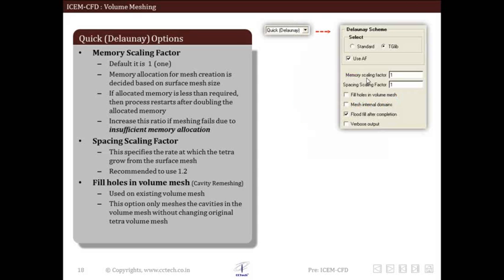The next option is fill holes in volume mesh. This tick mark option in the lower section of the panel is used to fill holes in the volume mesh without affecting the existing mesh. Holes can be created due to incomplete meshing processes, or regions containing poor mesh quality elements can be deleted and remeshed using this option to improve the volume mesh quality.